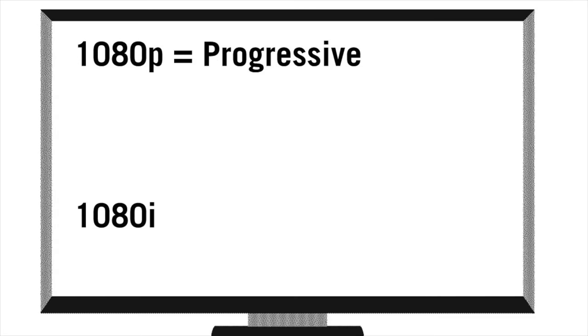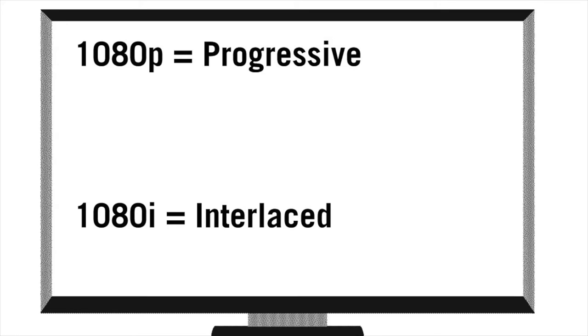Back in the day, you had the option of 1080p or 1080i. P is almost the guaranteed version now, which stands for progressive — all 1080 lines are displayed at the same time. The i meant interlaced, which meant that it would alternate lines, so 540 lines would show at a time, and they would cycle back and forth at an extremely fast rate. To the human eye, it probably wasn't even noticeable in most cases, but P is the superior way to go.